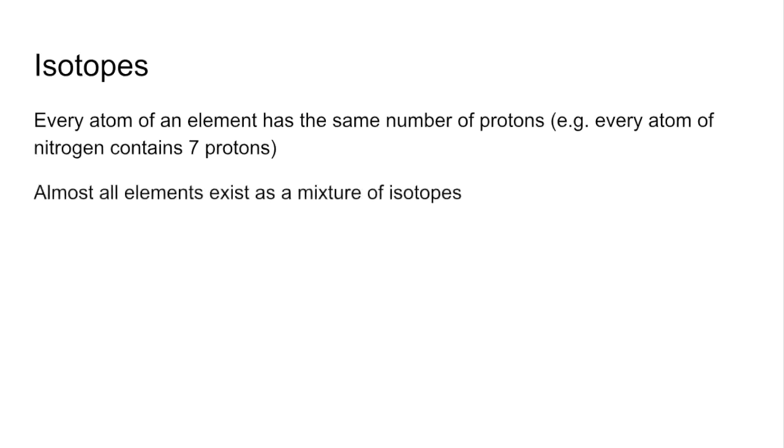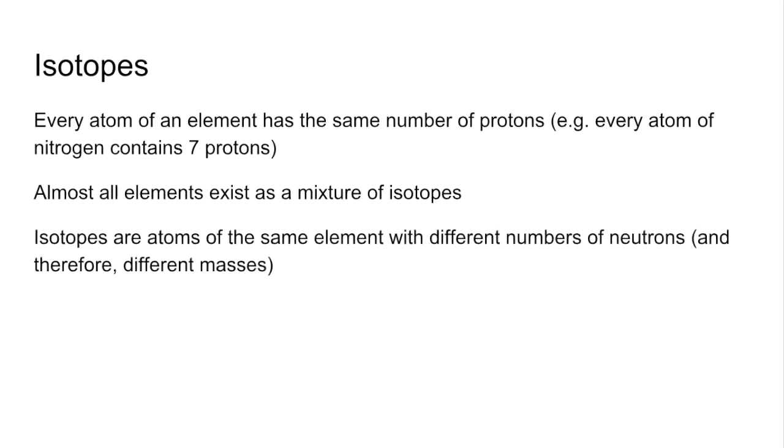Almost all elements exist as a mixture of isotopes and isotopes are atoms of the same element with different numbers of neutrons. So they've got the same number of protons but different numbers of neutrons and that's going to give them different masses.